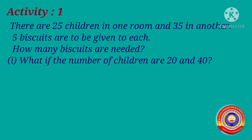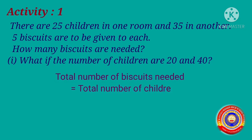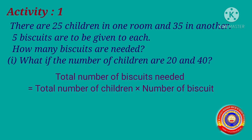What if the number of children are 20 and 40? First of all, we have to find the total number of biscuits needed for 25 children in one room and 35 children in another room. Then we have to find out the total number of biscuits needed if the number of children are 20 and 40. The total number of biscuits needed is equal to total number of children into number of biscuits for each.